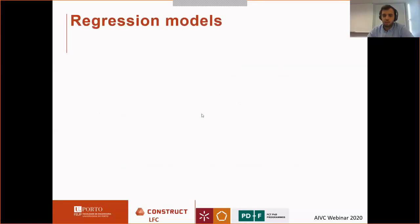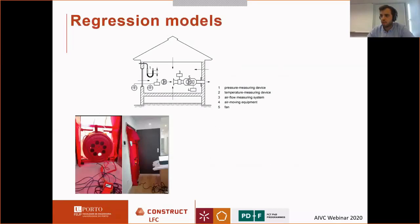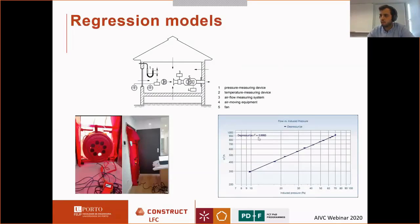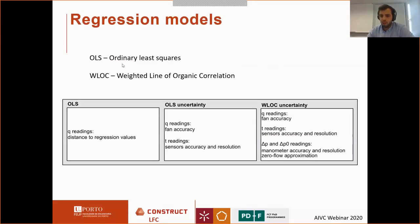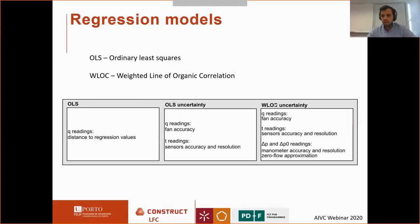To make this data treatment more robust, we can use different regression models. I'll present three of them. The first is used in the current ISO standard and uses the distance to the regression values of the airflow, caring for the variance of these values. The second is the same type but uses the fan accuracy for each point — the uncertainty in the airflow based on the fan accuracy and the resolution of temperature sensors. The third is the weighted line of organic correlation, which associates weights to the pairs of airflow and pressure differences alongside the accuracy of the fan and temperature sensors.